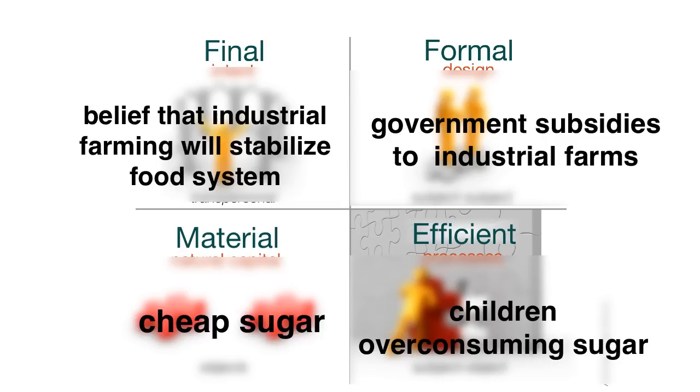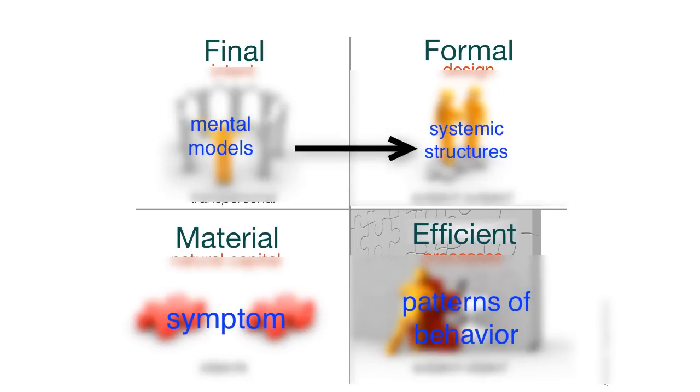So akin to an iceberg model, Aristotle's model of causality enables one to think of the interacting systemic conditions that create the systemic phenomena that we call problems.